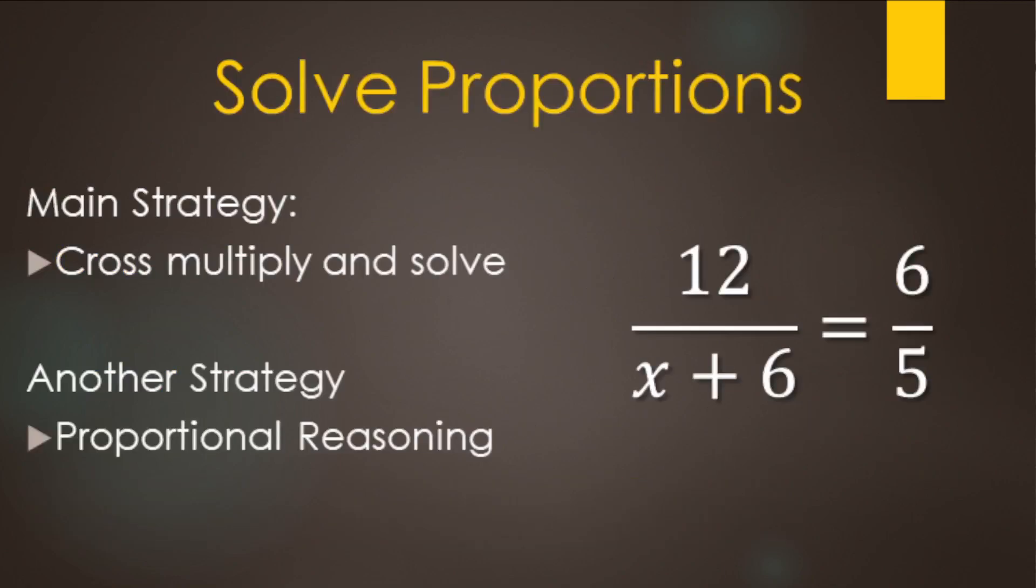So remember, when we solve proportions, cross multiply and solve will work on all of them. And it's kind of the straightforward, procedural way of doing it. Another way that you can do is using proportional reasoning. What do I have to do to this ratio to get this ratio here? And then do that and then solve from there. But either way, you're still going to have to do some solving. You can either distribute and then solve. Or you can look at dividing by the number that you're distributing by and then solving that way. It makes an easier equation. It's another way of doing it, assuming the numbers divide evenly.